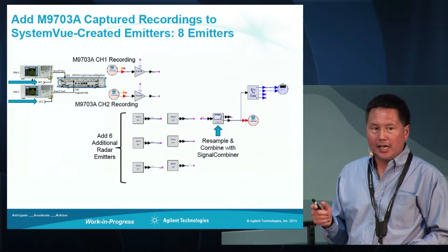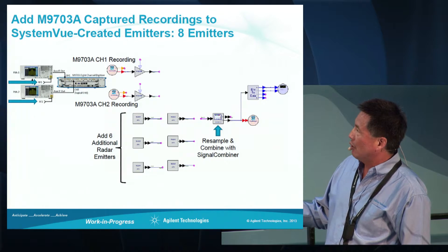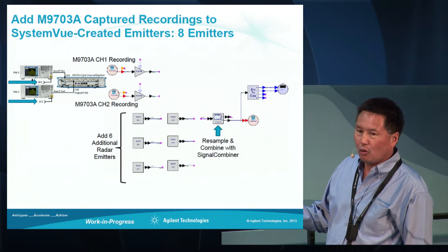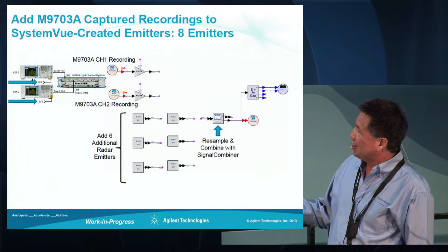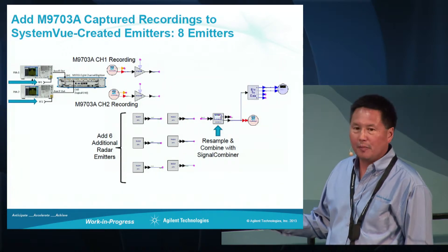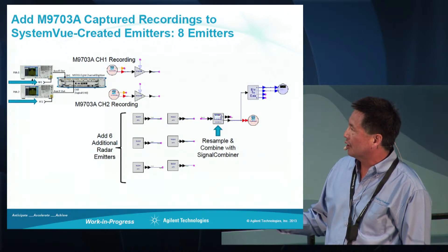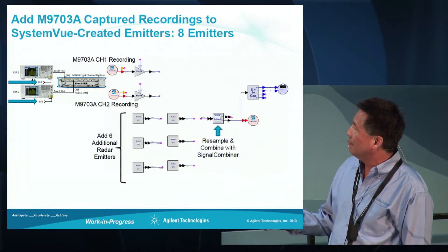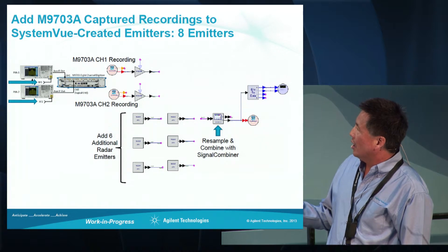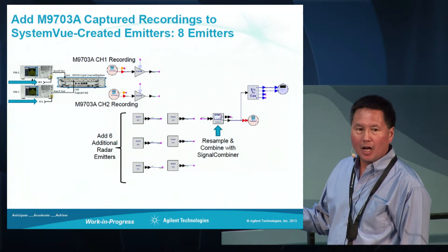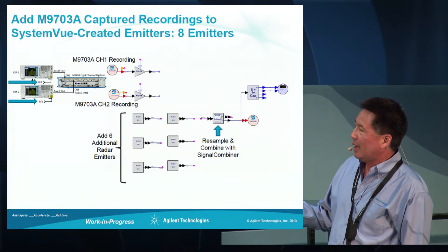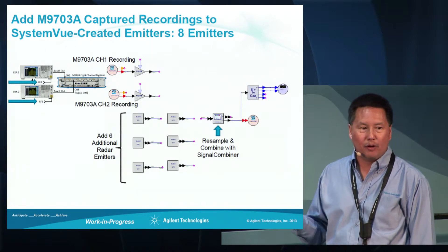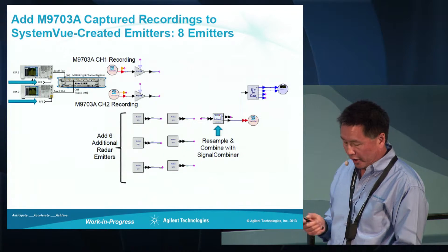Once the signals have been digitized, they can be read into simulation using our VSA source elements, which will read in both of the recordings that were captured. Once they're in simulation, we can sum them and combine them with other emitters. In this case, we've chosen six different radar emitters that are being simulated, and each emitter is resampled and combined using the signal combiner element. This effectively takes these eight input signals, resamples and combines them into one composite output waveform that can be downloaded to our AWG.